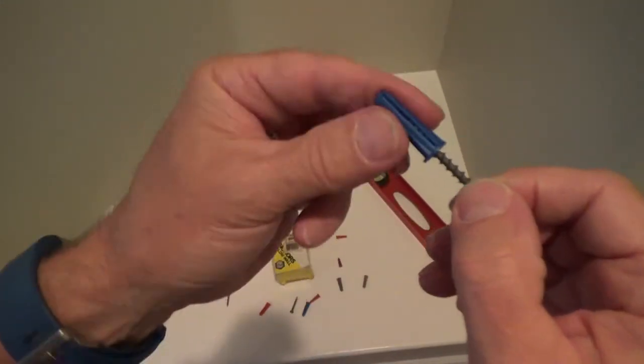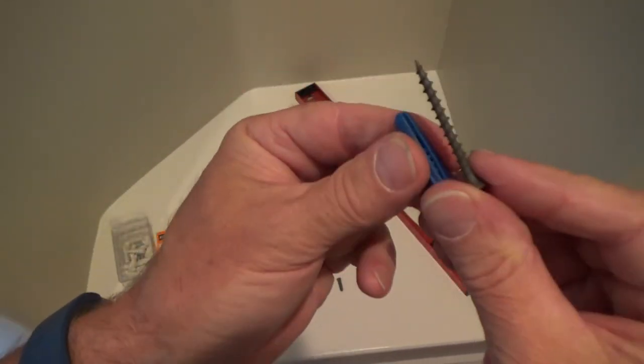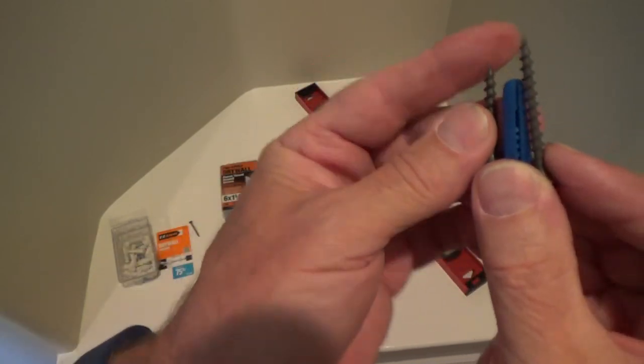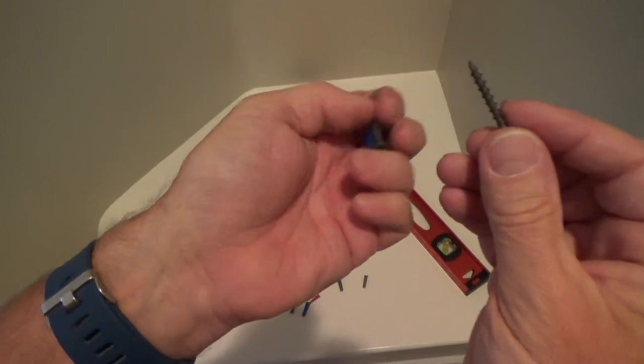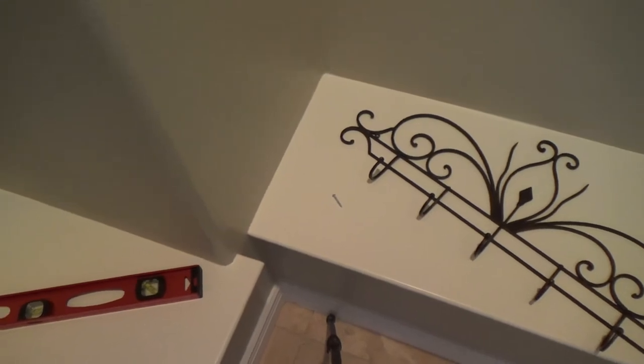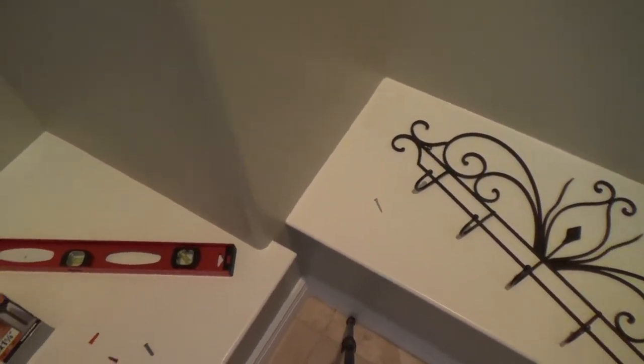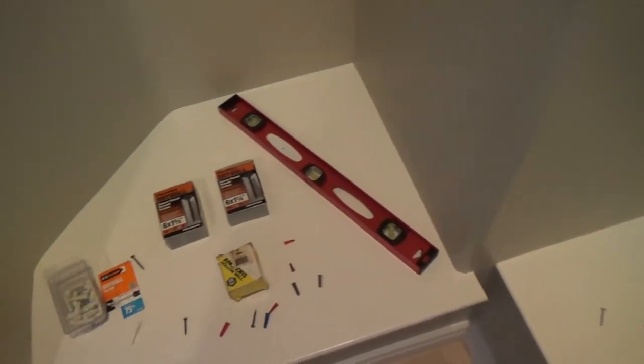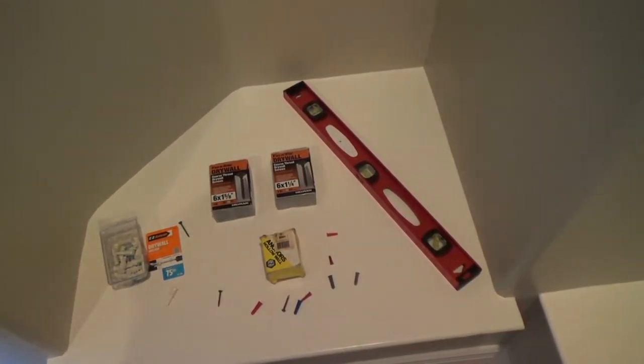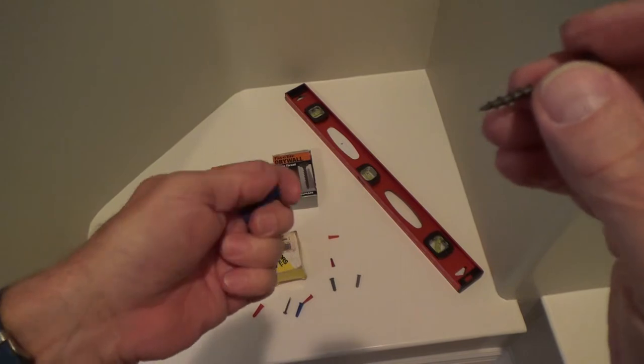If I was using this anchor, I would use this long screw more so than the smaller screw. The smaller screw would fit, but you first have to go through the thickness of our coat rack, which is about 3/16ths to a quarter inch.